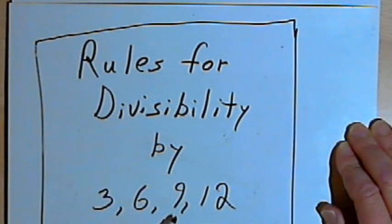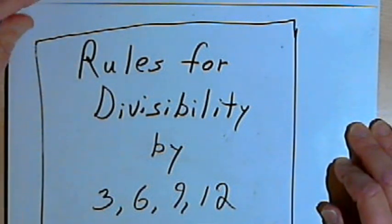I want to start with the rules for deciding whether you can divide a number by 9. So here's how the rule works.